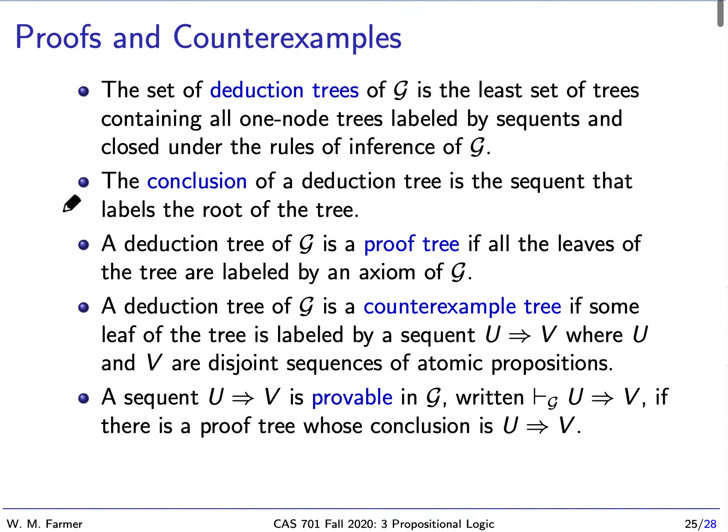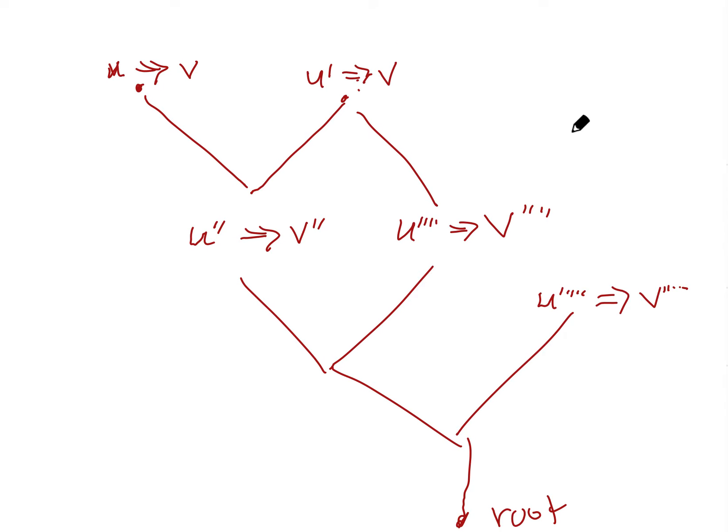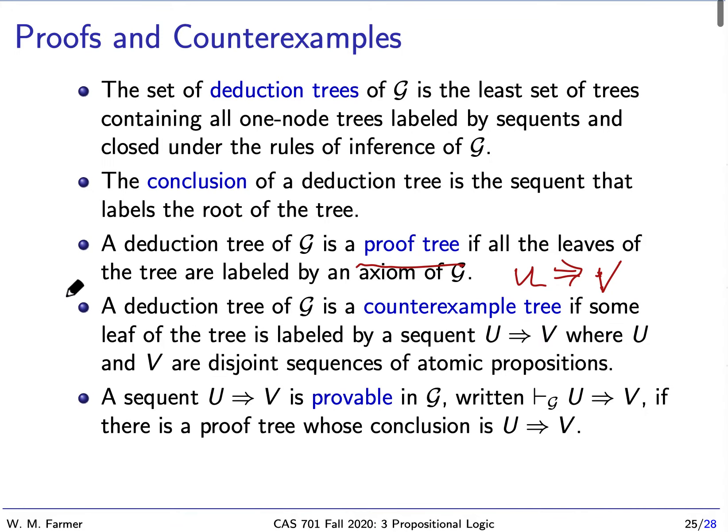A deduction tree is a proof tree if all the leaves of the tree are labeled by an axiom. And remember, an axiom is going to be a sequent where there's a common formula in both u and v. So that's what a proof tree is. All the leaves are labeled by the axioms of G. Let me just remind you, in this picture, what are the leaves? These would be the leaves of this tree.